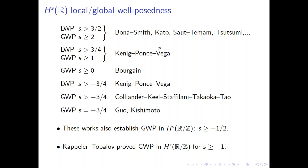All these real-line results have analogues in the periodic setting, where the global well-posedness threshold is s ≥ -1/2, obtained independently by Kenig-Ponce-Vega and Kishimoto. Since -3/4 < -1/2, the real line behaves better, which is expected due to more room for dispersion. It was therefore a huge breakthrough and surprise when Capella and Topalov proved global well-posedness for the periodic problem all the way down to H^{-1}. Their methods do not adapt to the real line, posing a big challenge for both the dispersive and the completely integrable communities.